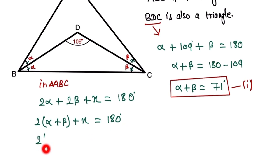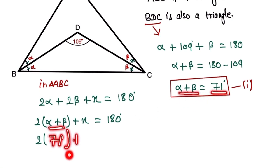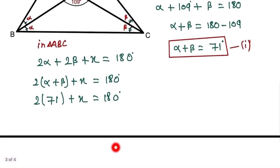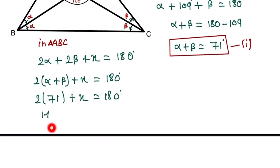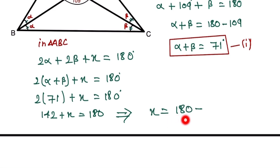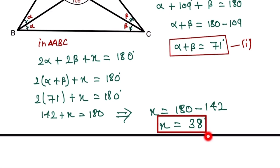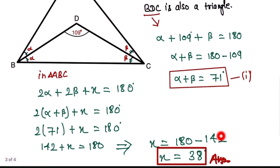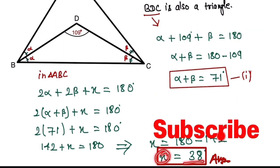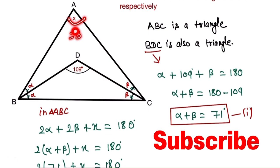We already found that alpha plus beta equals 71 degrees. So 2 times 71 — which is 142 — plus x equals 180 degrees. Therefore, x equals 180 minus 142, so x equals 38 degrees. This is our answer. Thank you so much for watching. If you like the video, please subscribe to our channel and share it with your friends.